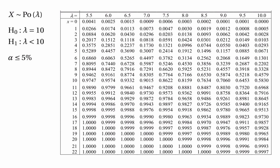So the critical region in this situation is the numbers 0, 1, 2, 3, 4 — those are the numbers for which we'd end up rejecting the null hypothesis. The critical value is 4, because if we start out from the expected number of events and move towards 0, 4 is the first number we come to that's inside the critical region. And the actual significance level of this test is 0.0293, because the probability of getting 0, 1, 2, 3, or 4 is just 0.0293.